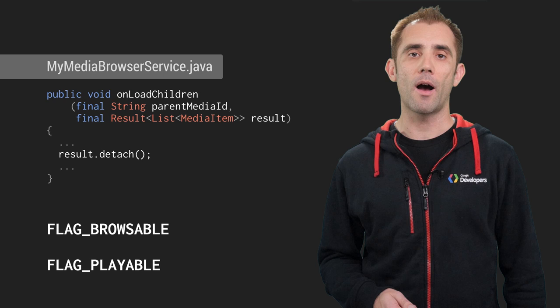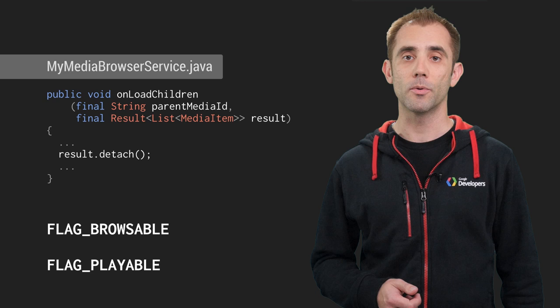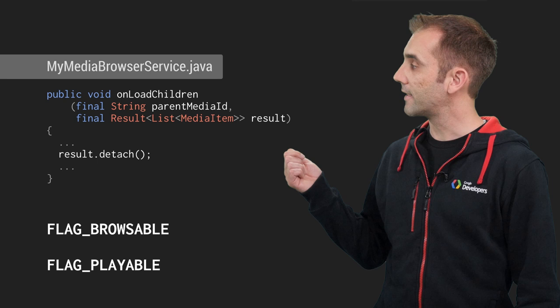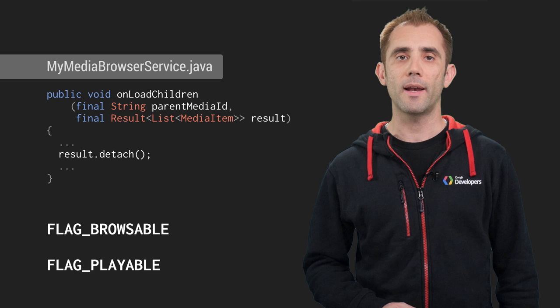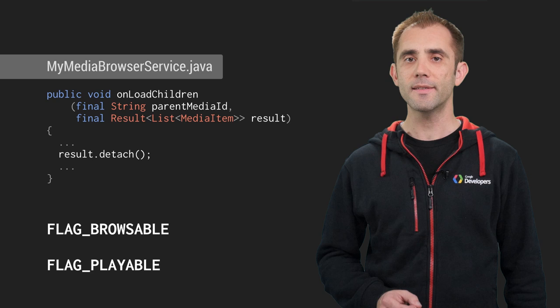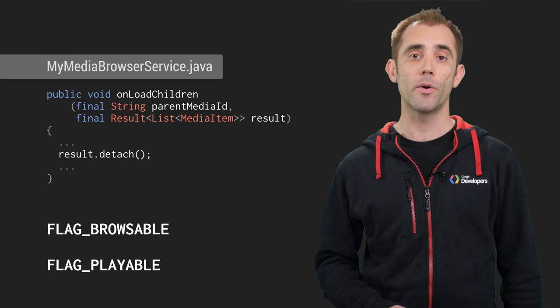The next step is to provide onLoadChildren which generates a list of media items given the media ID of a parent node. Each item returned can be either browsable like subfolders or playable like a song, and you can indicate the difference by passing one of these flags in the media item's constructor. Inside onLoadChildren you should spawn off an async task and then call the detach method. When the result is ready the async task can return the results using sendResult. Using an async task here ensures that the user interface is responsive and is not blocked while your code is querying your media library.